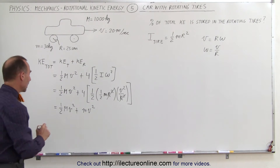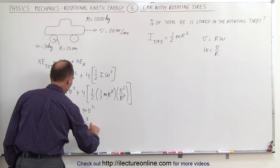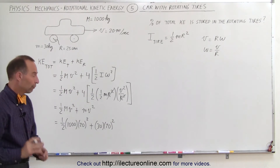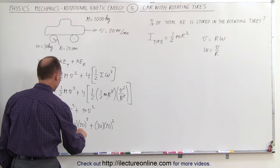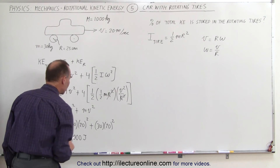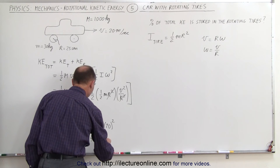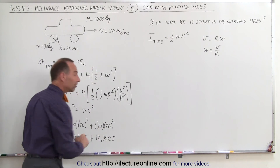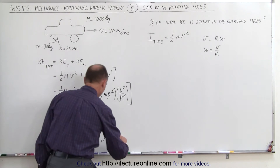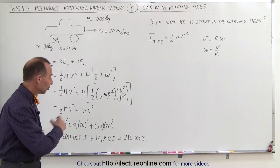Now we plug in the numbers. This equals one half times one thousand times 20 squared, plus 30 times 20 squared. The translational kinetic energy comes out to 200,000 joules for the car and tires combined, plus 12,000 joules for the rotational kinetic energy of the four tires, giving a total kinetic energy of 212,000 joules.